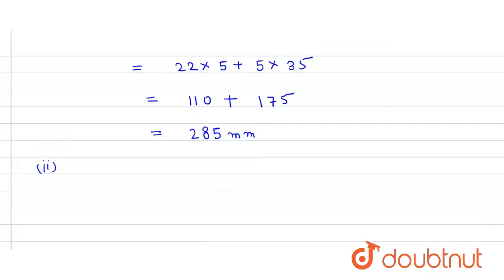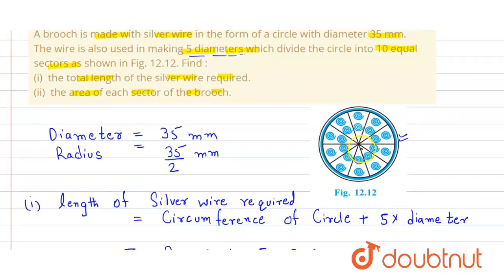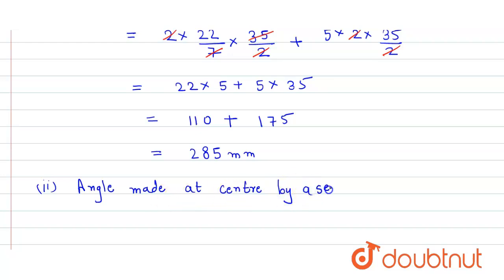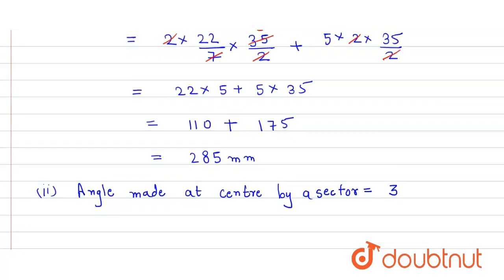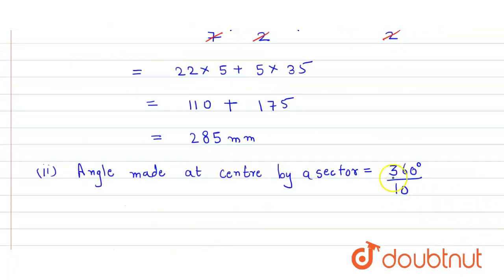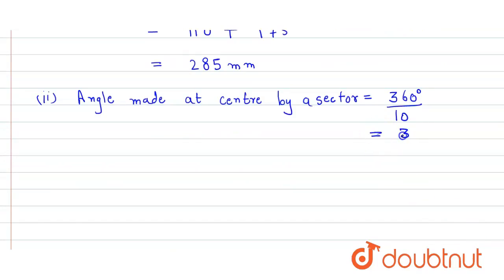In the second part, we have to find the area of each sector. For that, we first find the angle of each sector. The angle made at the center by each sector equals 360 divided by 10, which gives 36 degrees.